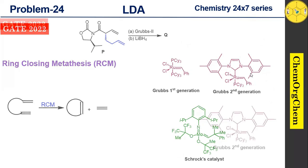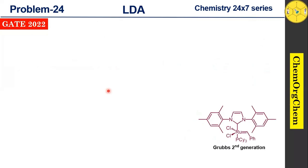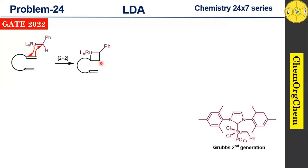Now let's look at the reaction mechanism for ring closing metathesis. The alkene reacts with the Grubbs catalyst — for convenience we rename all other ligands as L. The terminal position of the alkene always attacks the metal carbene, and the metal center attacks the inner position of the alkene, resulting in a [2+2] cycloaddition to produce a four-membered metallacyclobutane ring. This is followed by retro [2+2] cycloaddition to produce a new ruthenium carbene species and styrene as a byproduct.